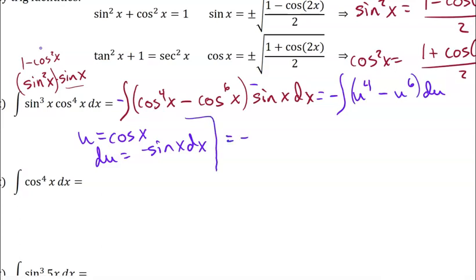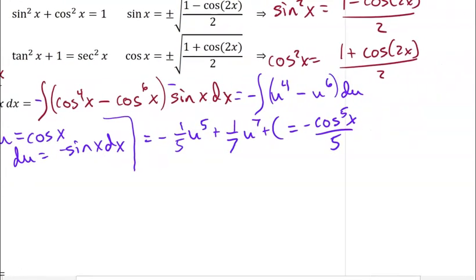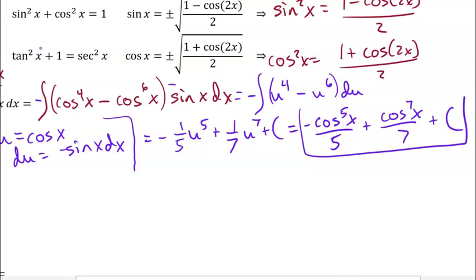And then integrating that, I have the opposite of 1/5 u to the fifth — I'm going to make this a plus 1/7 u to the seventh plus C. Which, when we plug cosine back in, is going to be negative cosine to the fifth x over 5 plus cosine to the seventh x over 7 plus C, and that is my answer. And if you want to leave it as 1/5 out in front instead of putting it over 5, you can.